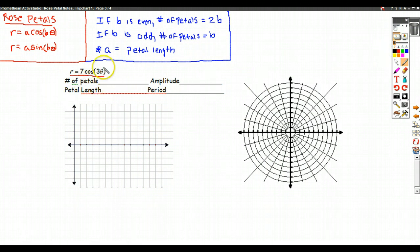So the number of petals in this case, well, that's our b, and b is odd, so there's going to be three petals. And the petal length is going to be 7.